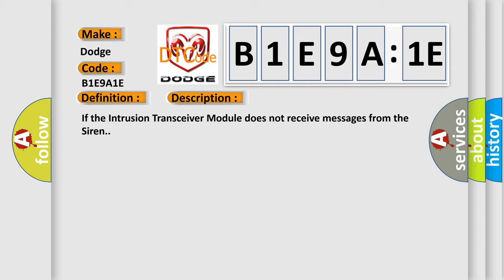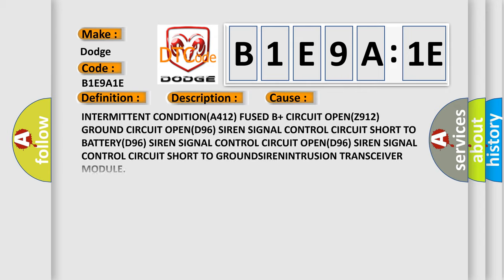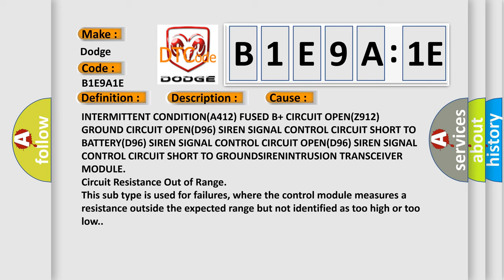This diagnostic error occurs most often in these cases: Intermittent condition A412 fused B-plus circuit open, Z912 ground circuit open, D96 siren signal control circuit short to ground, siren intrusion transceiver module circuit resistance out of range. This subtype is used for failures where the control module measures a resistance outside the expected range but not identified as too high or too low.